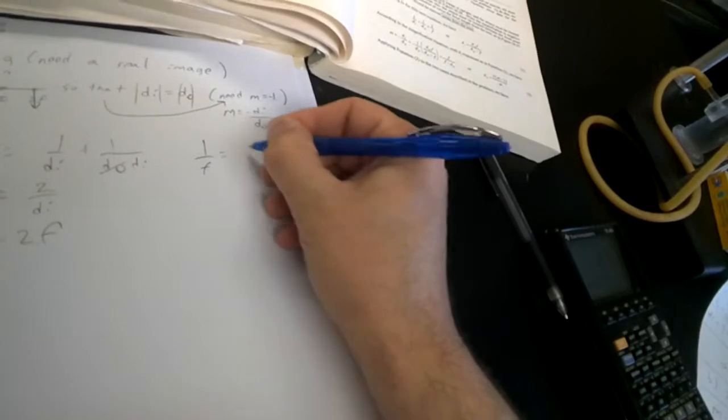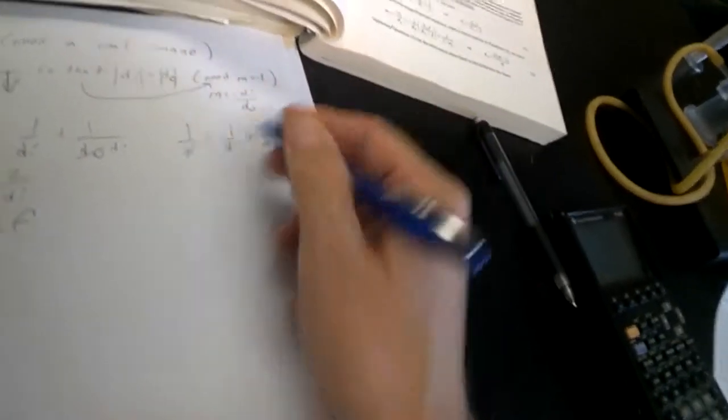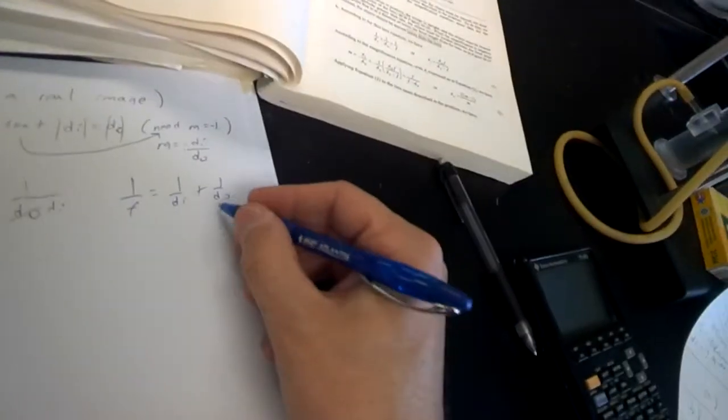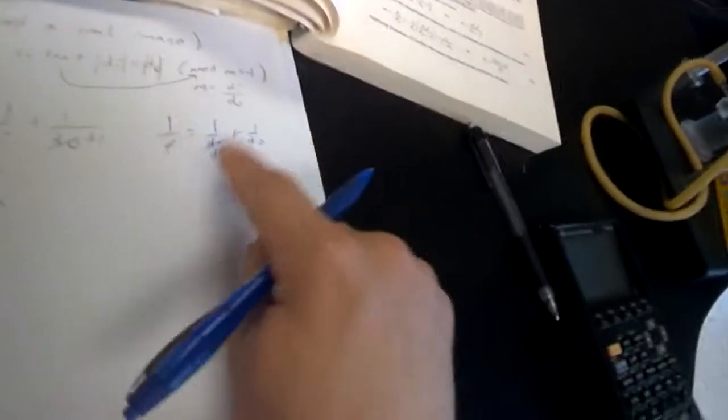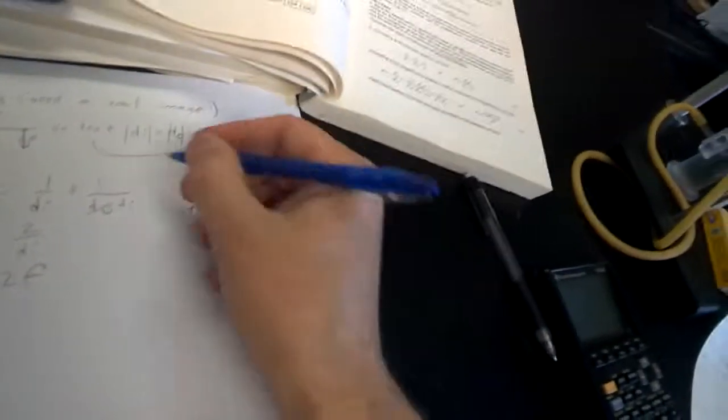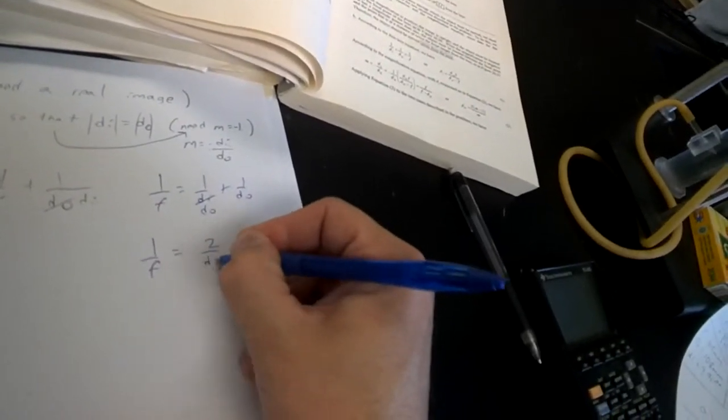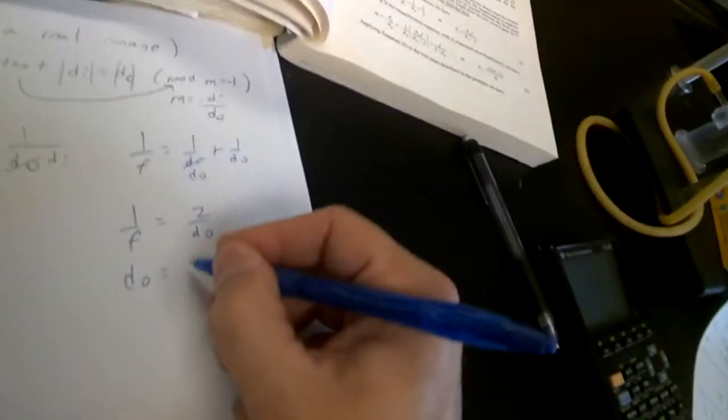So one over di again plus one over do, and these are interchangeable because the magnification is negative one. So this time instead of getting rid of do I'll get rid of di. I just make this a do, just straight substitution because di equals do. We do the same thing again: one over f equals two over do, or do equals 2f. So the object is over here.